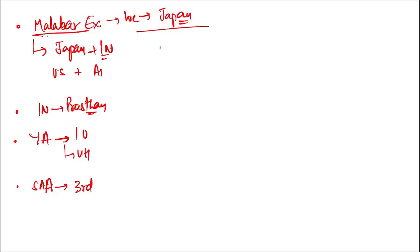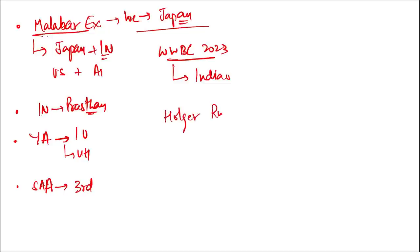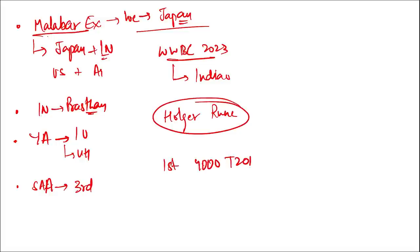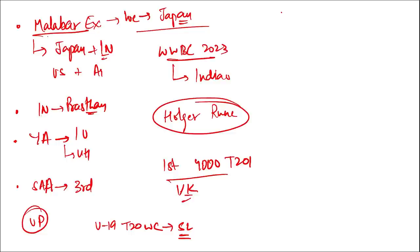India will host the Women's World Boxing Championship 2023. Holger Rune won the men's singles 2022 Paris Masters title, defeating Novak Djokovic in the final — his first Paris Masters title. Virat Kohli became the first player to score 4,000 T20 international runs. The Under-19 Men's T20 World Cup will be hosted by Sri Lanka. The Fit India School Week mascot — Tufan and Tufani — was launched by PV Sindhu.